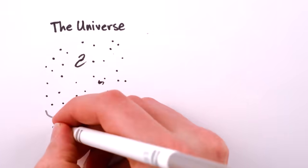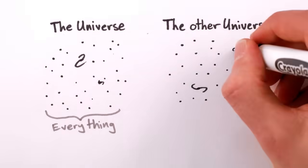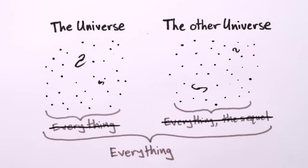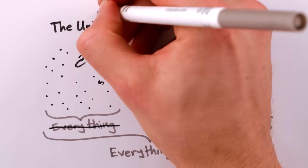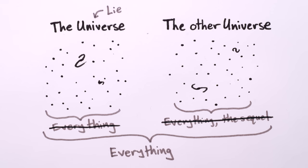I mean, if the universe is everything that there is, you can't have two versions of it, right? Otherwise, the pair would really be everything, and what you started off calling the universe wasn't. The problem here is terminology.